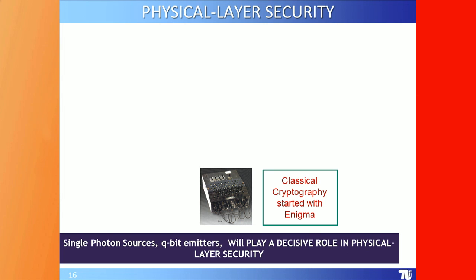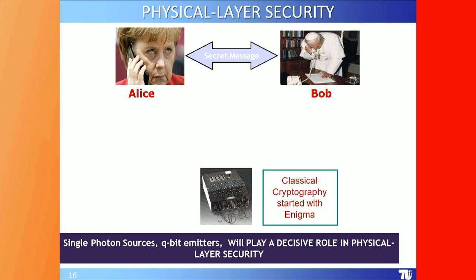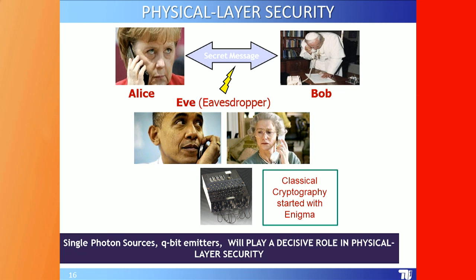Classical cryptography started with Enigma — a system used during submarine warfare in the Second World War. We have a secret message between Alice and Bob, with Eve as the eavesdropper. Single photon sources — qubit emitters — will play a decisive role in physical-layer security.